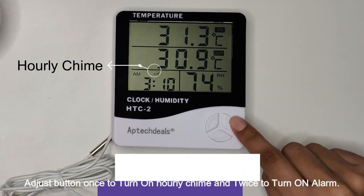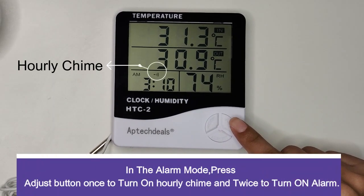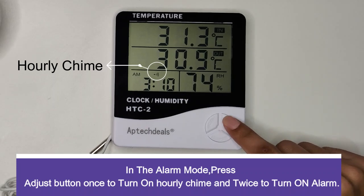In the alarm mode, press adjust button once to turn on the hourly chime and twice to turn on the alarm.